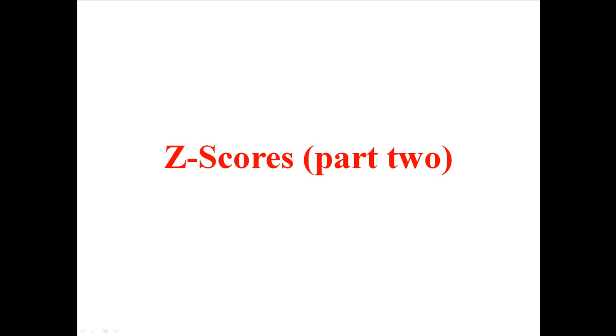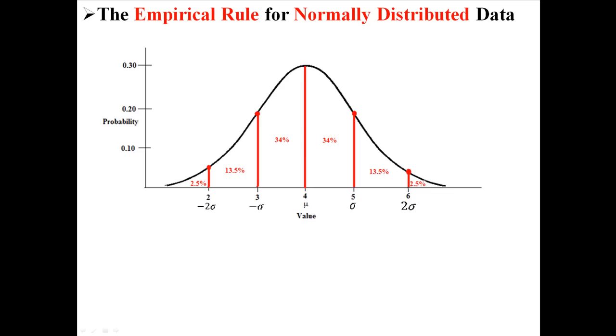This is the second lecture in a two-part series on z-scores. In the past, I've talked about the empirical rule for normally distributed data. What the empirical rule tells us is basically what probabilities, what areas, are associated with different parts of a normal curve, like 68% of scores within one standard deviation, or 95% of scores within two standard deviations of the mean.